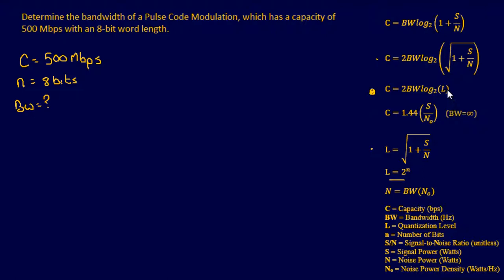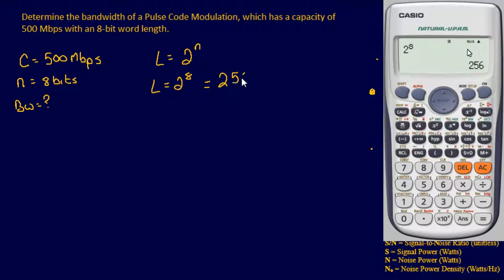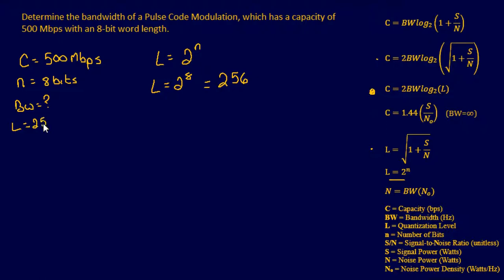Since this is a digital signal, we'll use the noiseless capacity equation along with the quantization levels formula. If we find the quantization levels first, we can plug and chug to find bandwidth. Quantization levels L equals 2 to the n, so L equals 2 to the 8, which gives us 256.